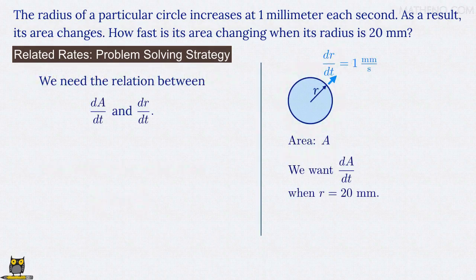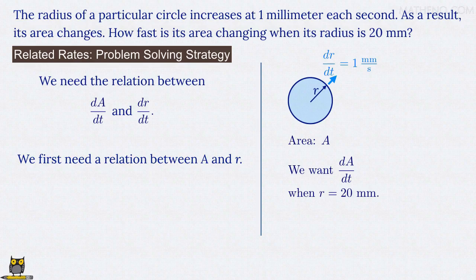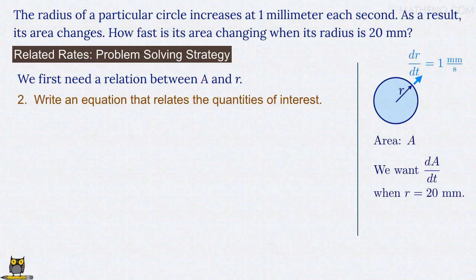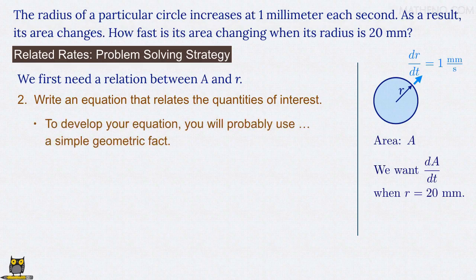In order to find that relation, we first back up a step and need to find a relation between A and r. That takes us to the second step of our problem-solving strategy, to write an equation that relates the quantities of interest, in this case between A and r. In any related rates problem that you solve, you'll use one of four approaches that you need to know to complete this step. We cover each of them in our free materials on our website. This problem uses the easiest of those four approaches, a geometric fact that you either know or can look up. Here, we just need the formula for the area of a circle in terms of its radius, A equals pi r squared.